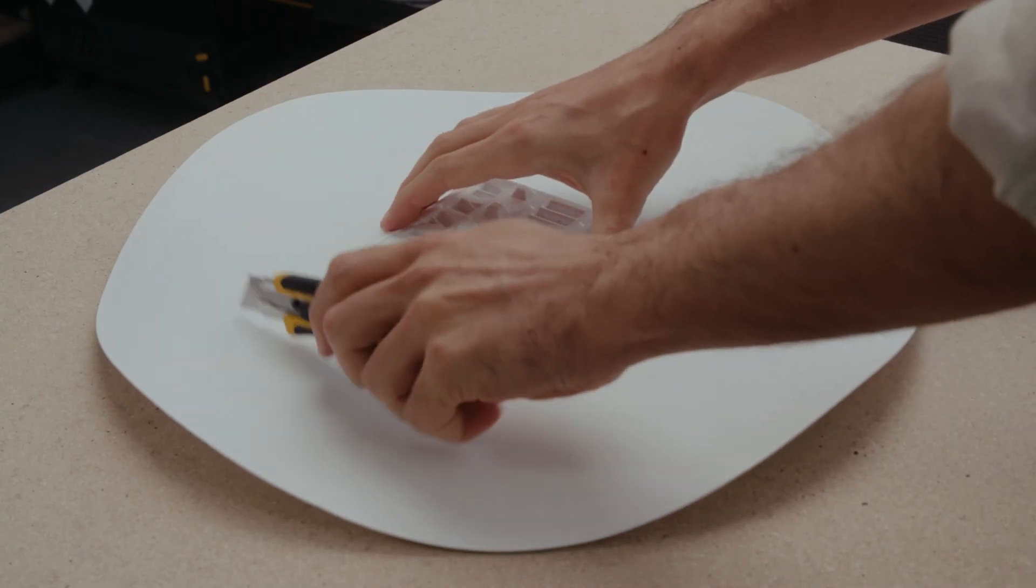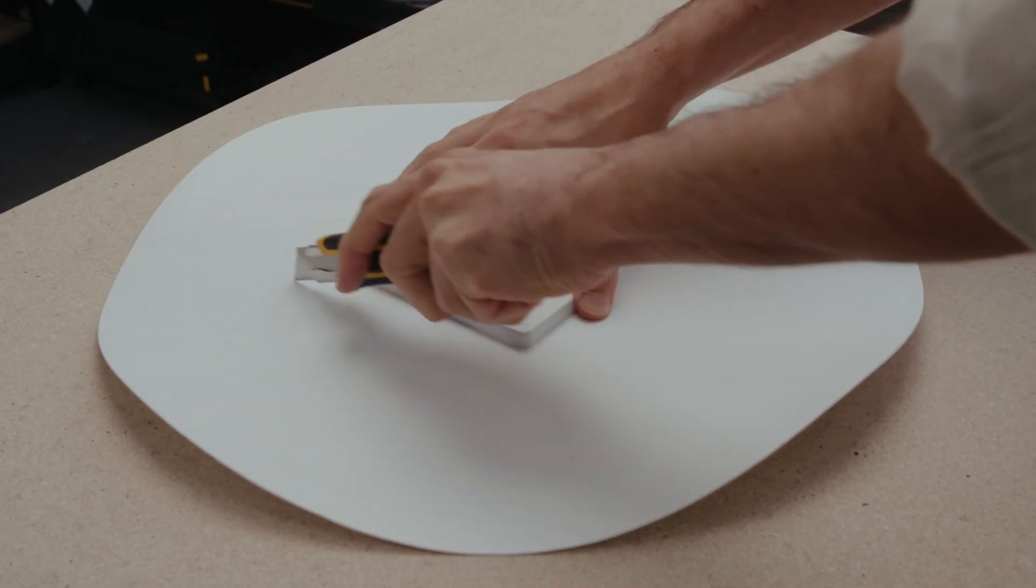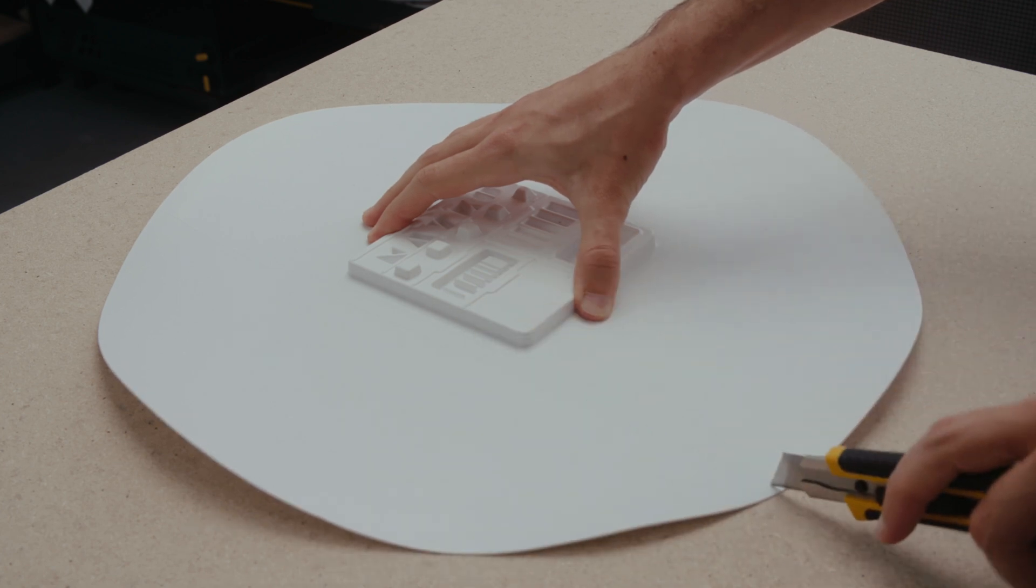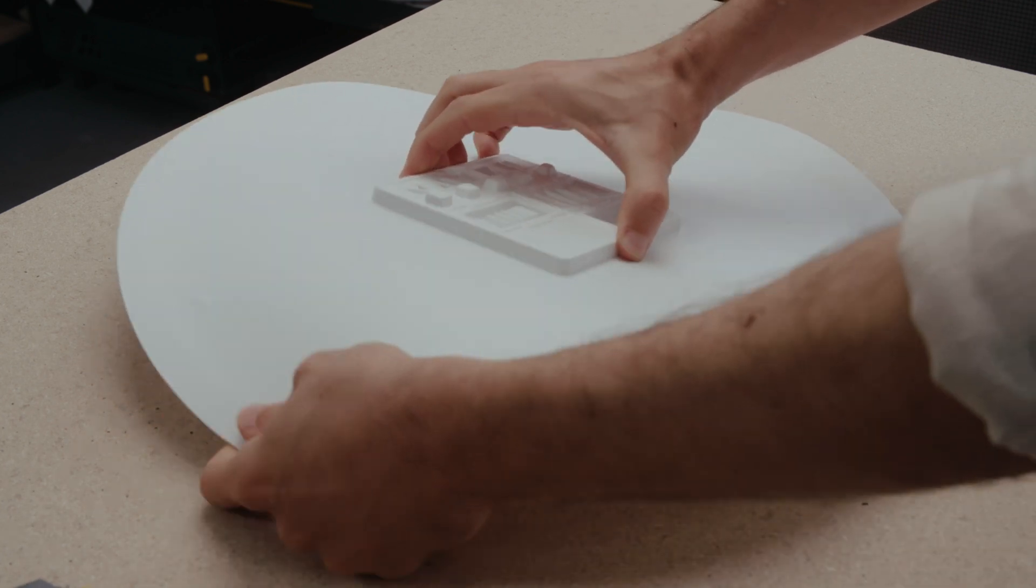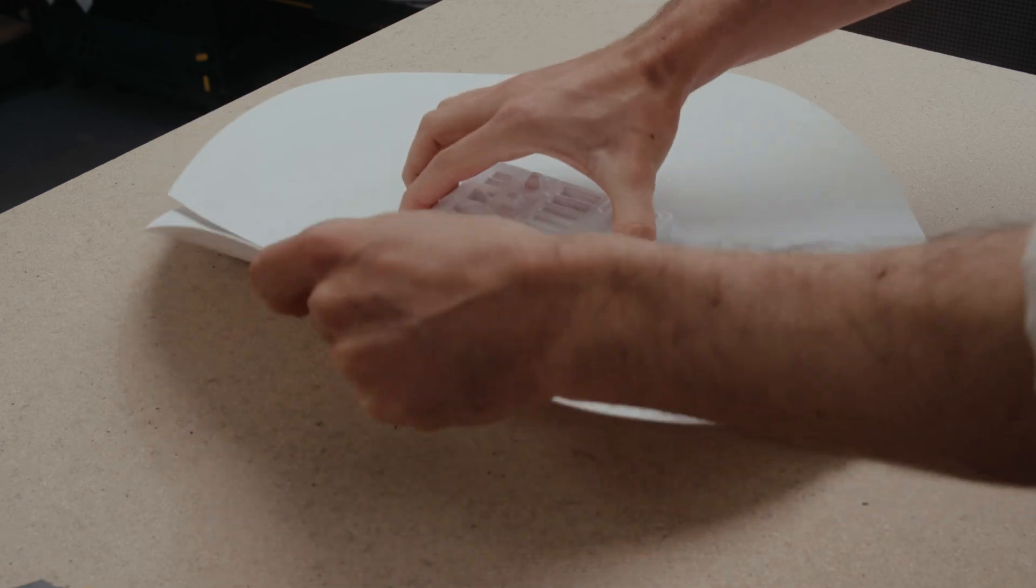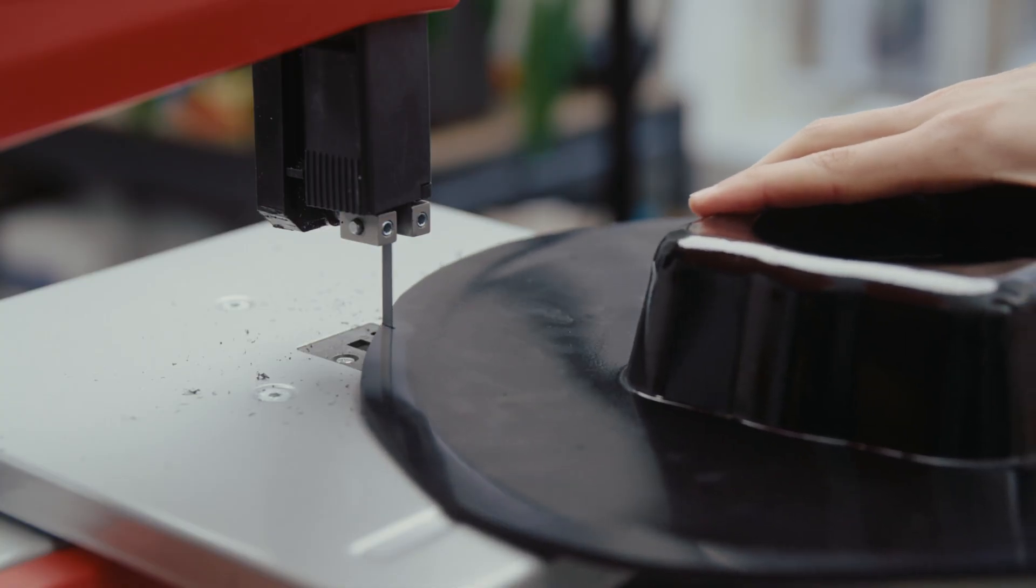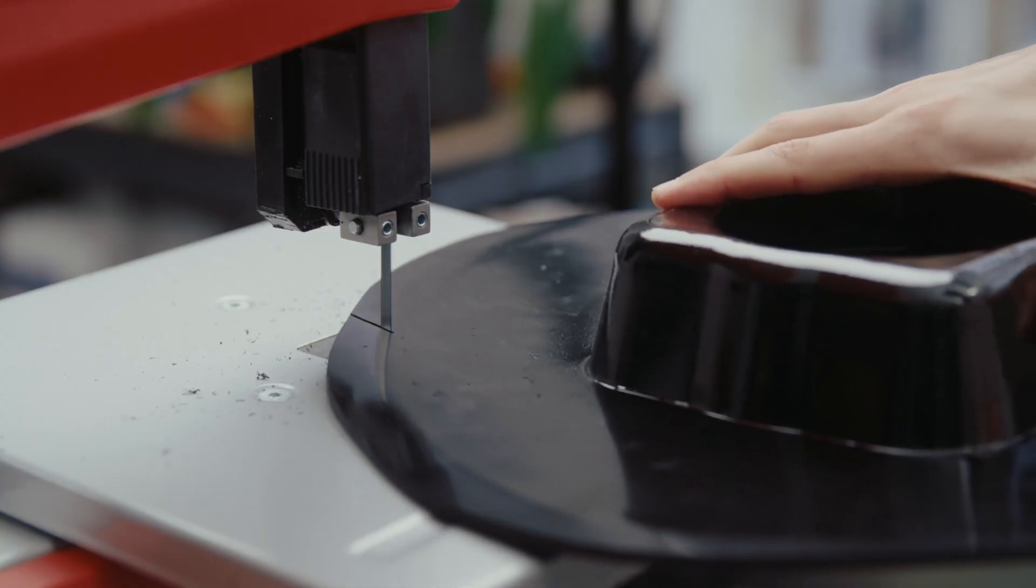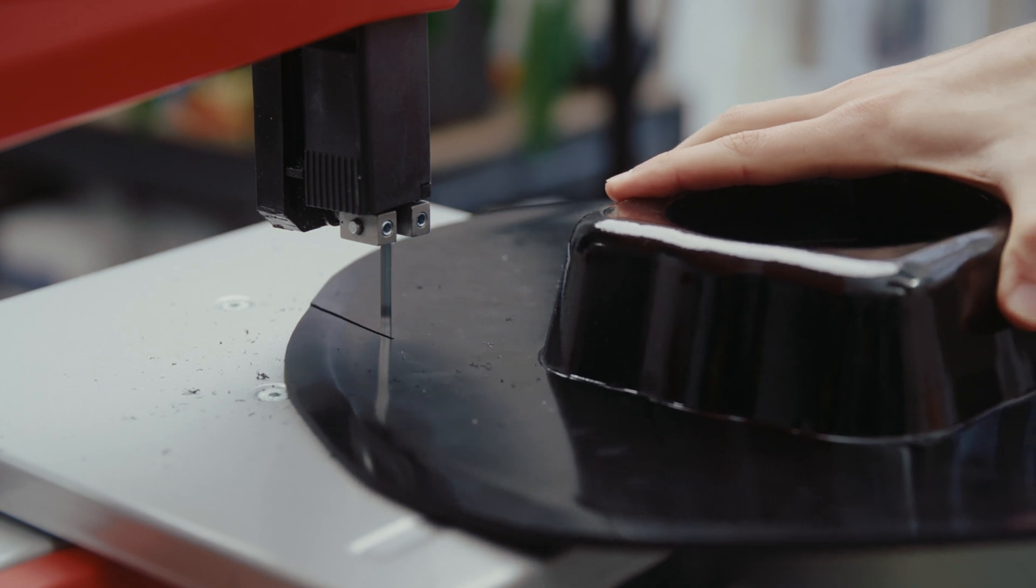For thinner and flexible materials, hand cutting them with scissors or a knife will work great. If you're using thick or rigid materials like in our case, using electric tools like a bandsaw, drill, or a rotary power tool is highly recommended.